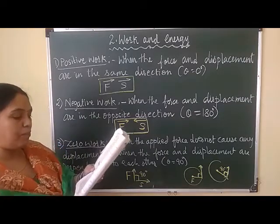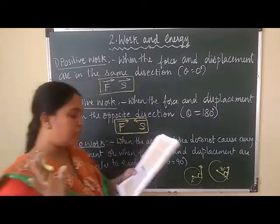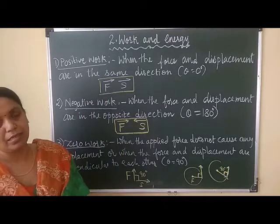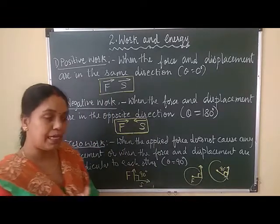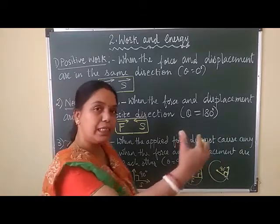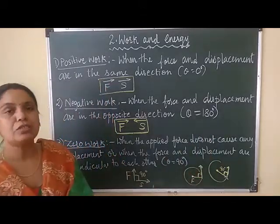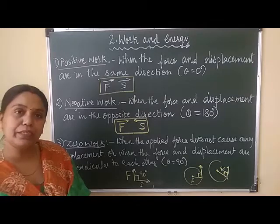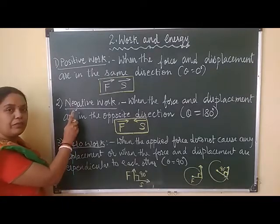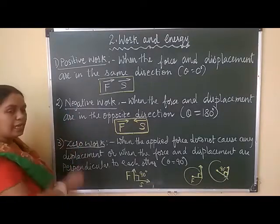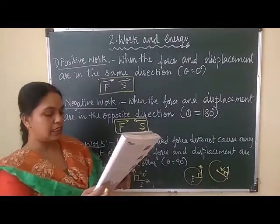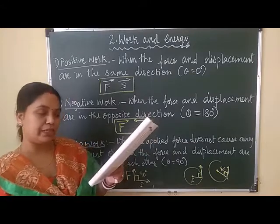Next: stopping a moving car by applying the brakes. The brakes are applied to stop the car, but the car is showing displacement in the forward direction. So force and displacement are opposite to each other — this is the example of negative work. Write down the examples. The definitions are given in your textbook, page number 20.